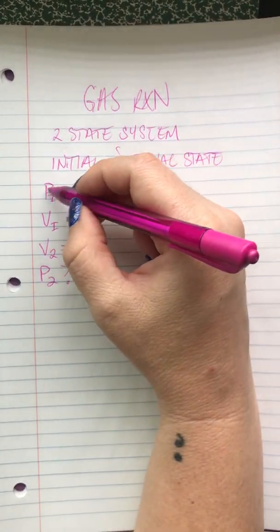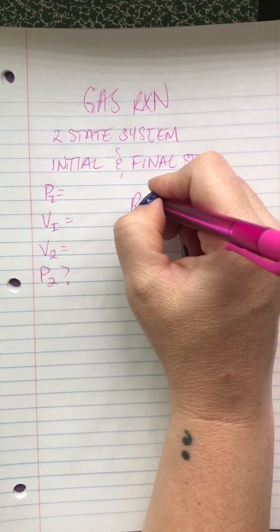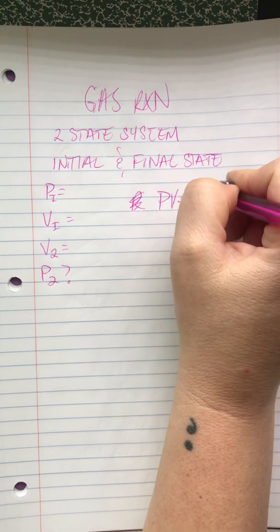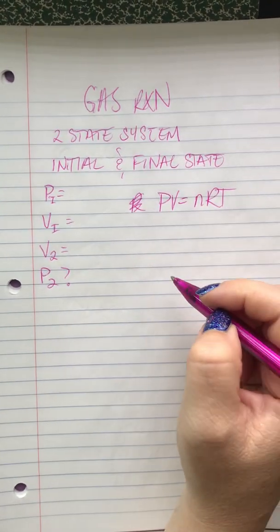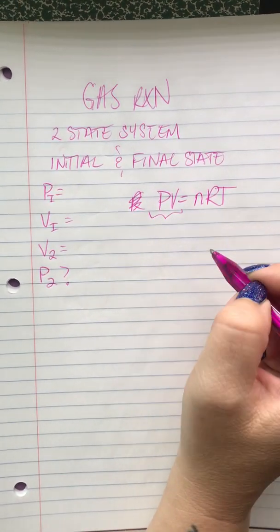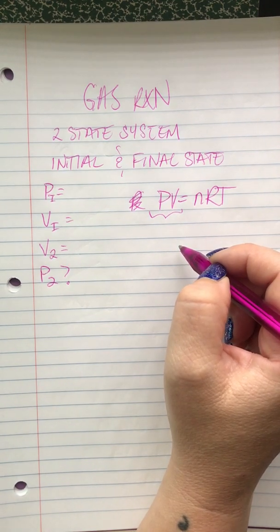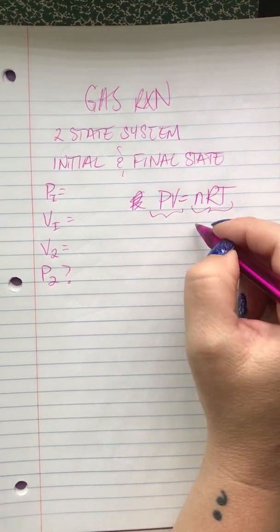So if only the pressure and the volume are changing, then do you see how this is the only part of the PV equals nRT that's changing? This is constant.